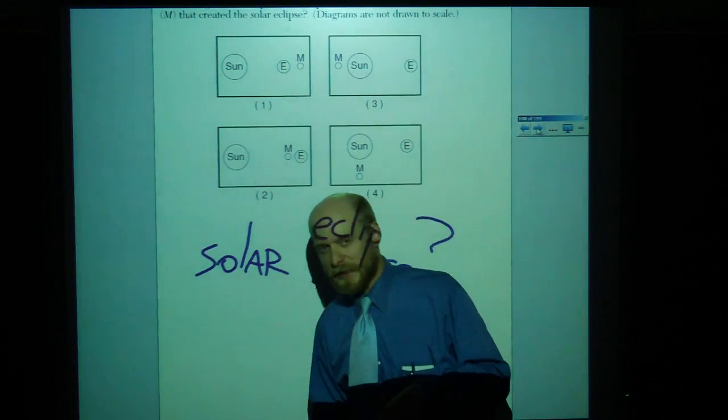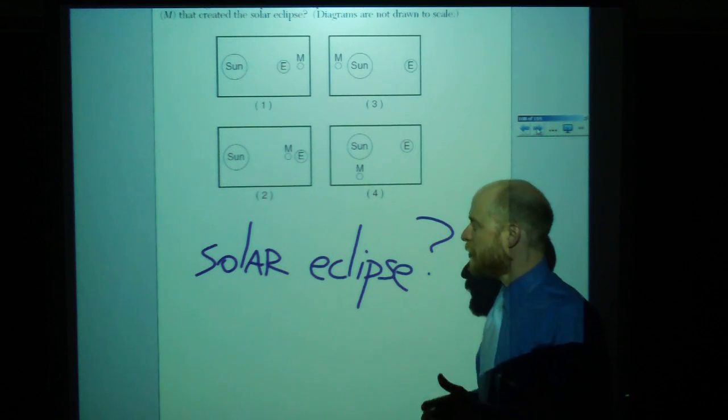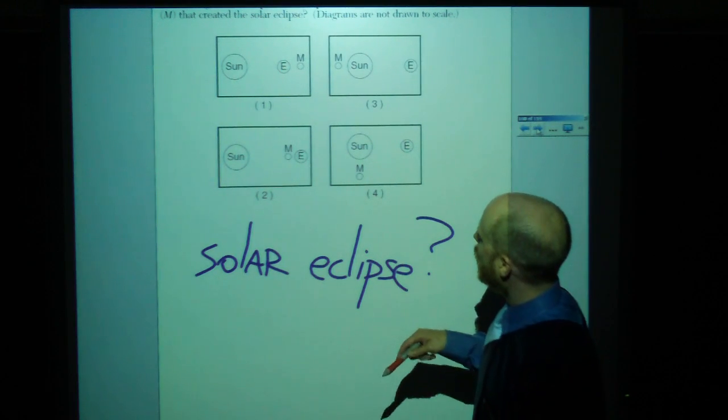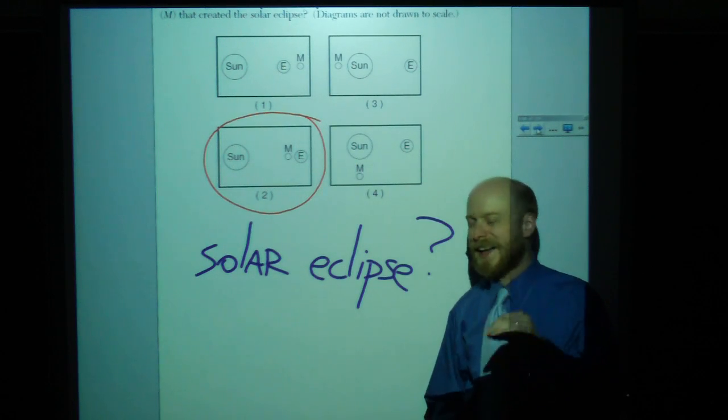Whatever's in the phrase means that's what's being blocked out. The sun is being blocked out by the moon, so the moon has to be in the way. What would that be? That'd be this right here. That is where a solar eclipse is possible.